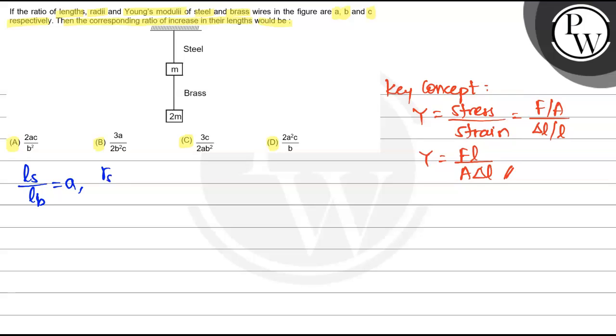Radius of steel divided by radius of brass equals b. And Young's modulus of steel to Young's modulus of brass equals c.